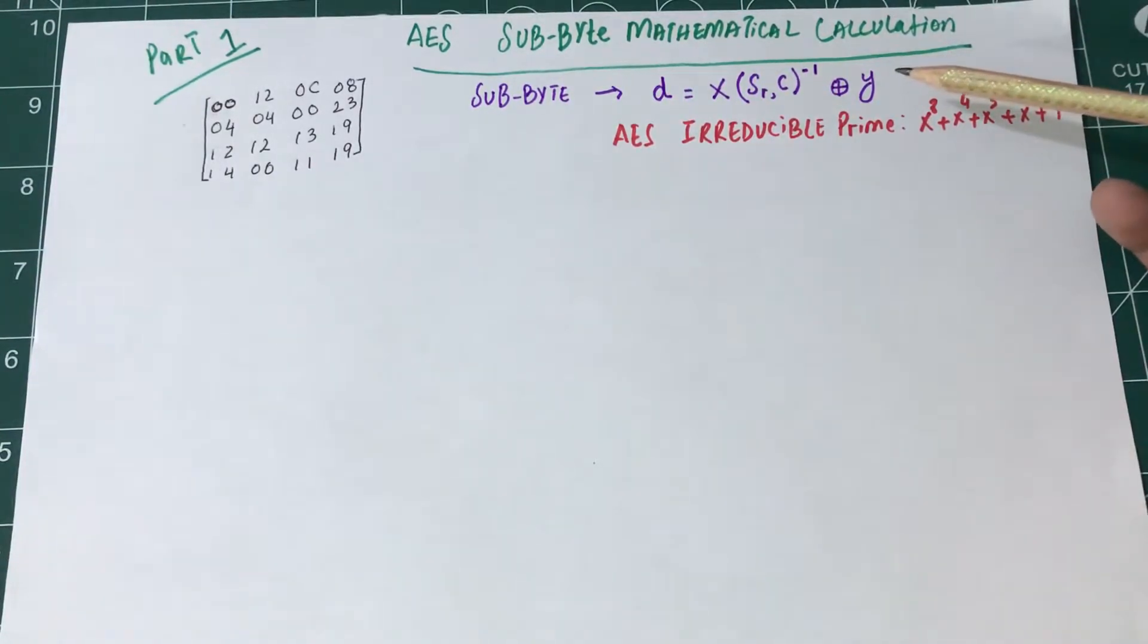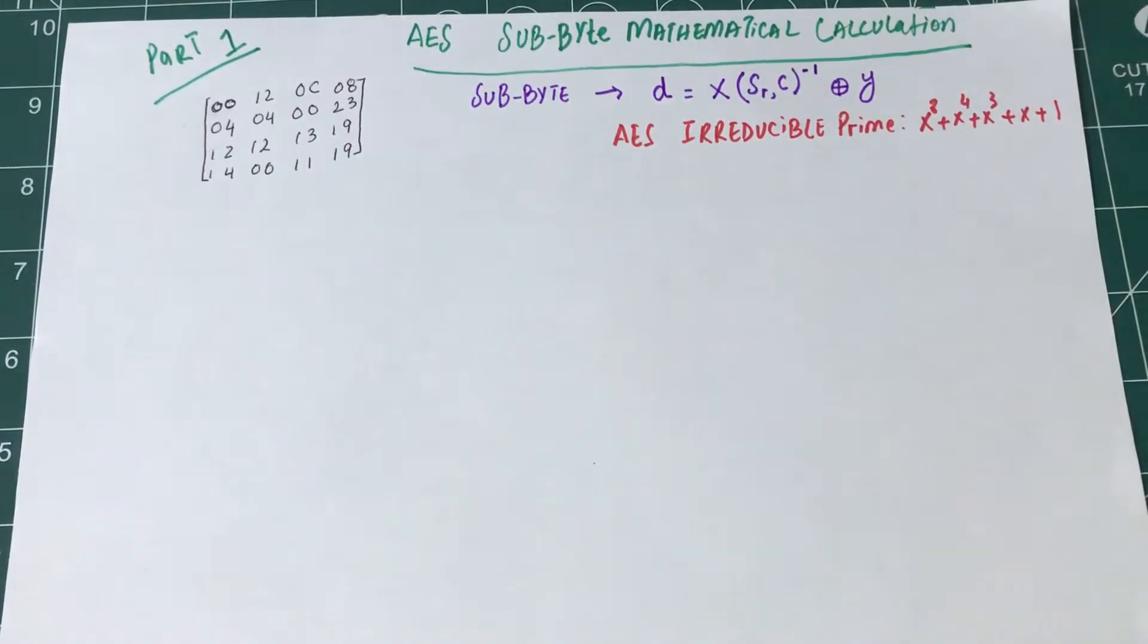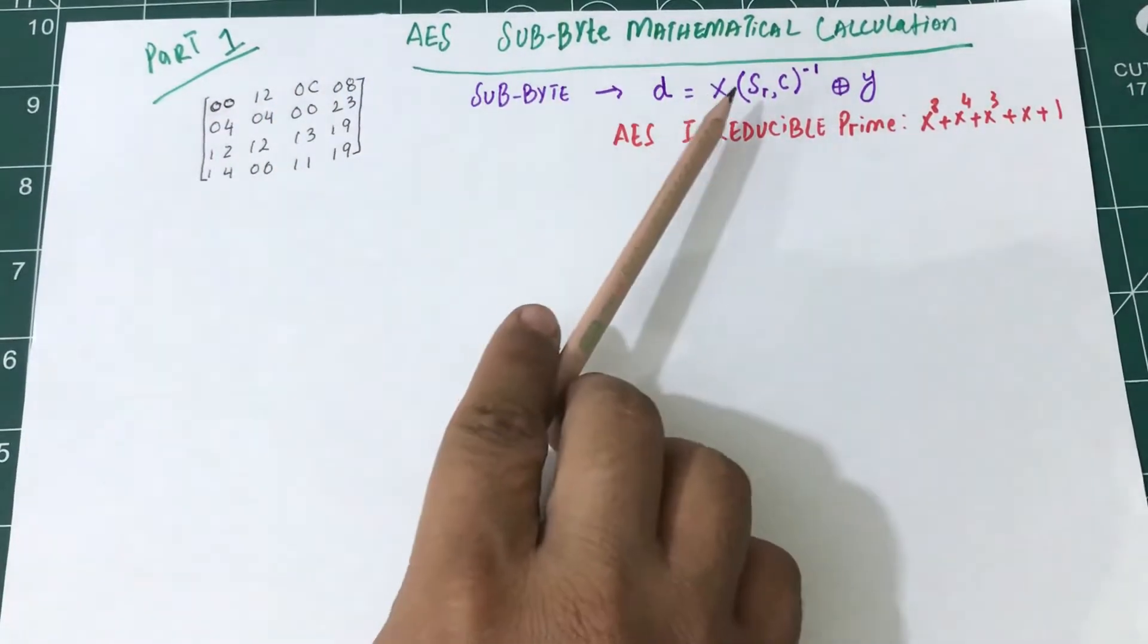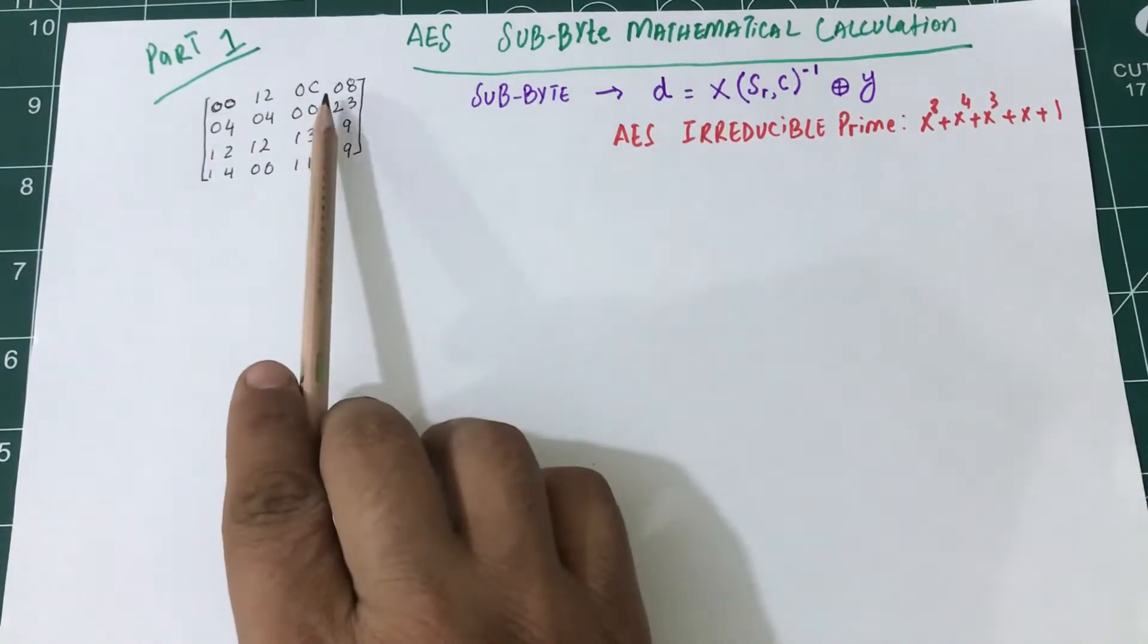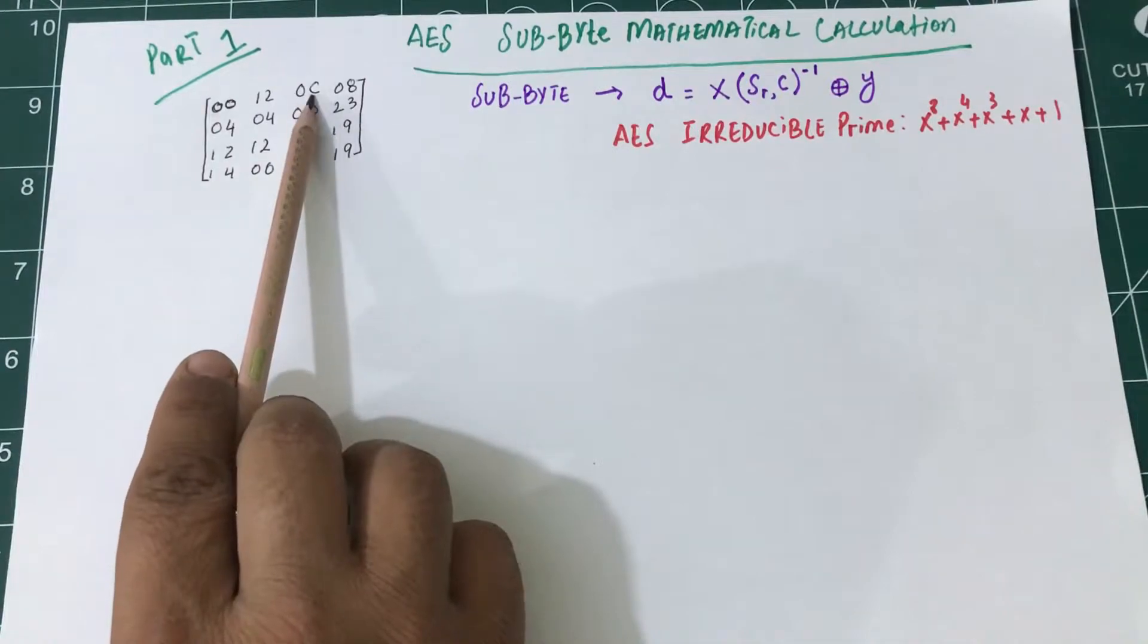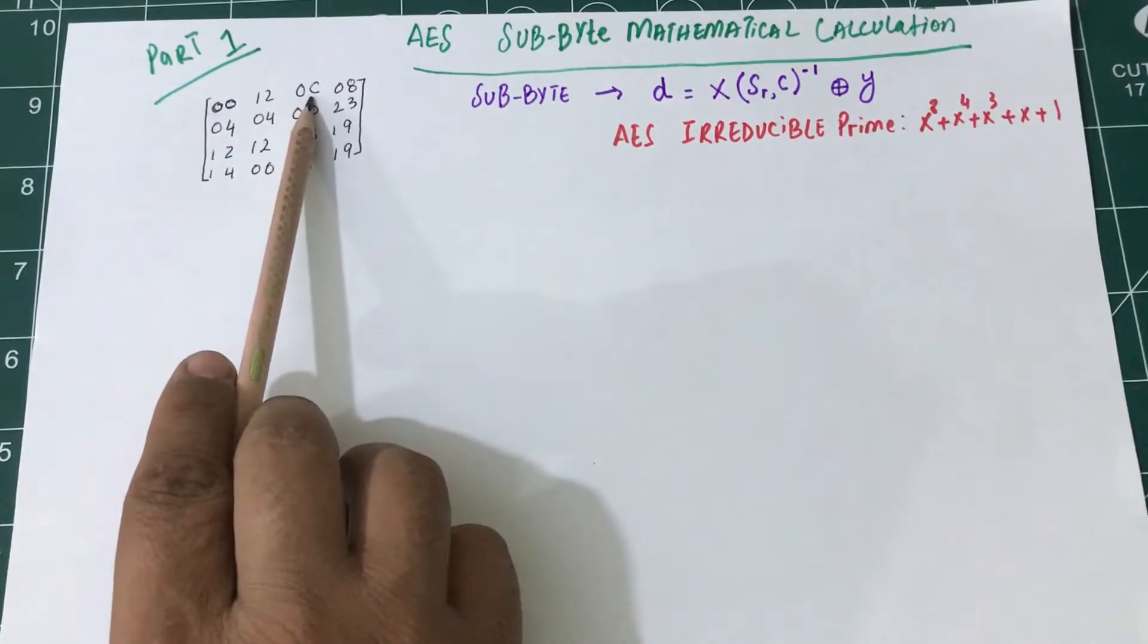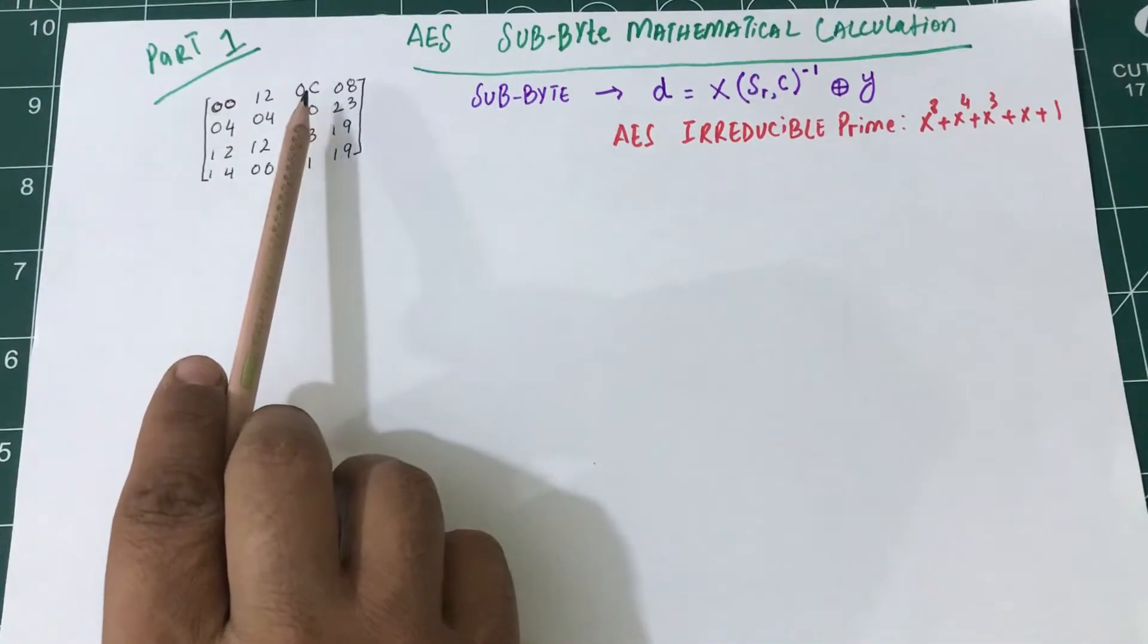If I'm going to transform SubByte mathematically without using tables, first I'm going to pick up a value. I'm picking first row, third column from the state matrix. The value that I want to transform is 0C. These values are in hexadecimal.